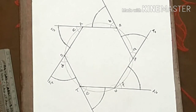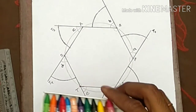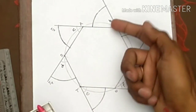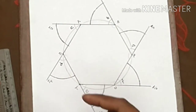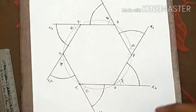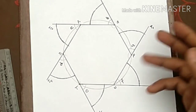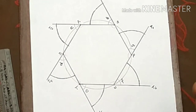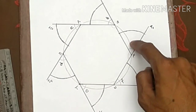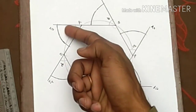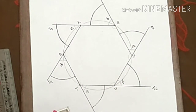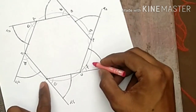Dear students, after completing this work, take your colors and fill different colors in each of the six exterior angles — Angle 1, 2, 3, 4, 5, 6 — each in a different color.